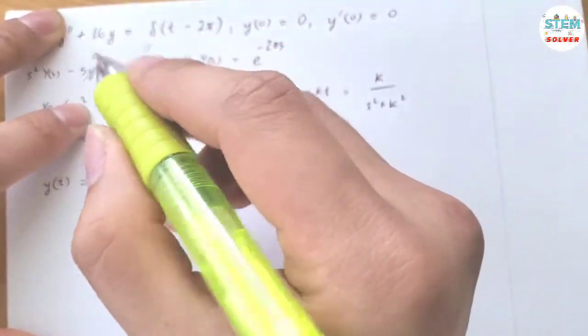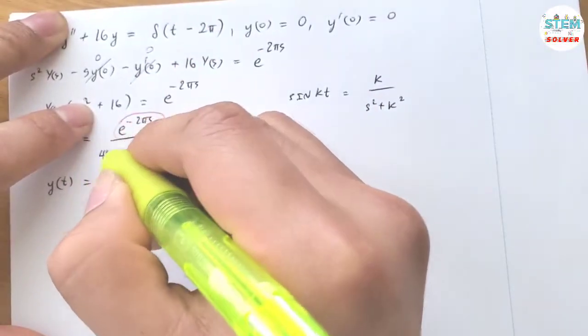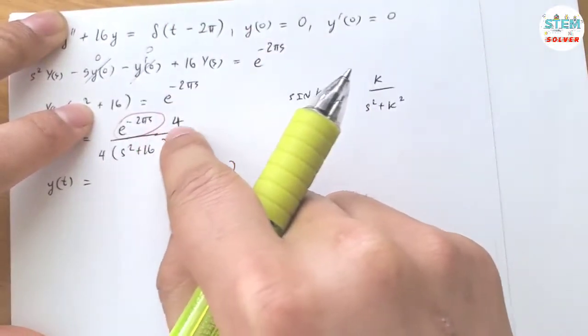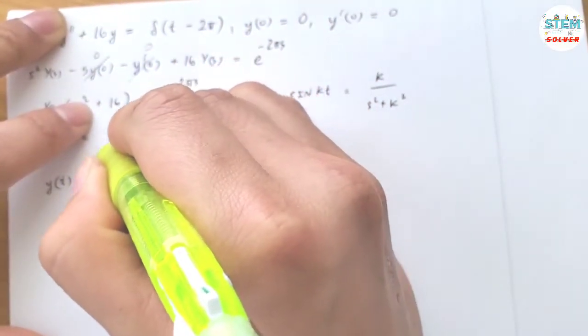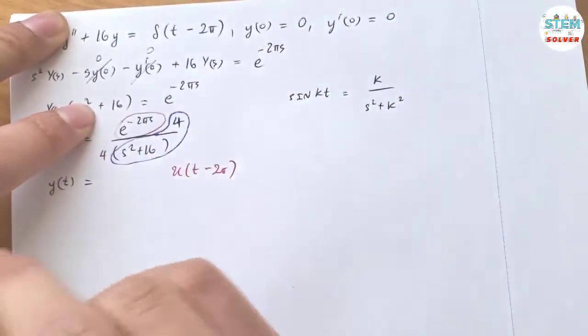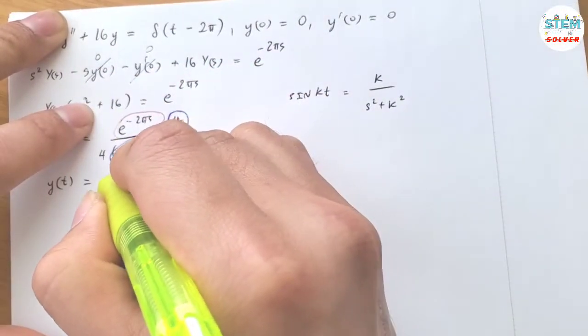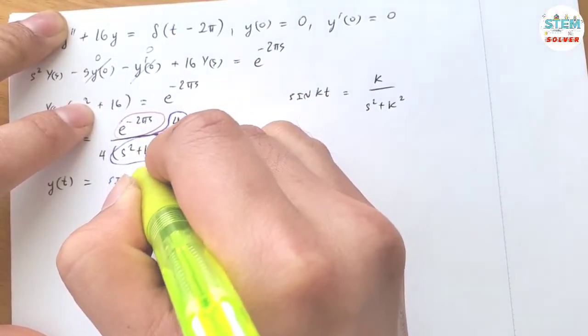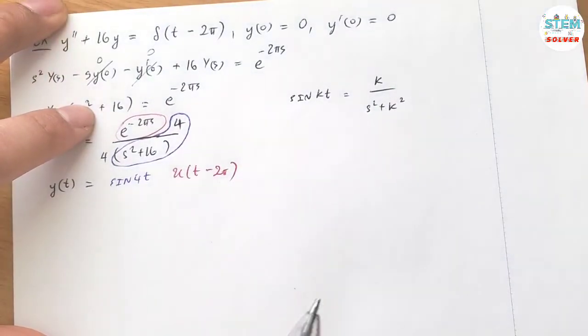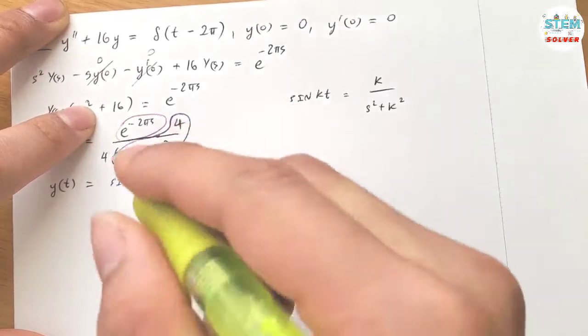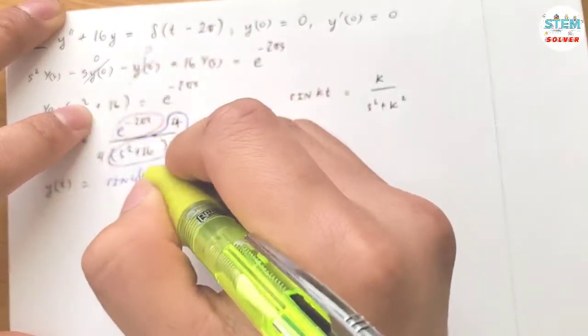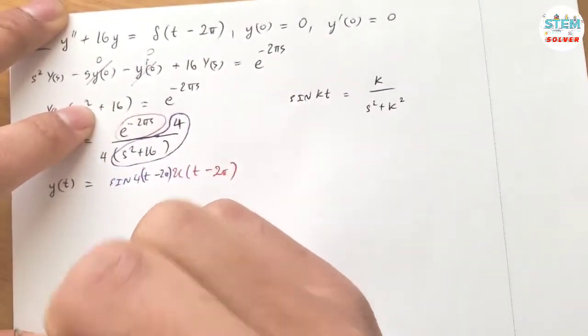And then I have to divide it by 4, so basically I multiply the whole thing by 4 over 4. And this gives me sine 4t. But you also have to get a step function, which means that the t has to match up with this t over here, so this t has to be t minus 2π.